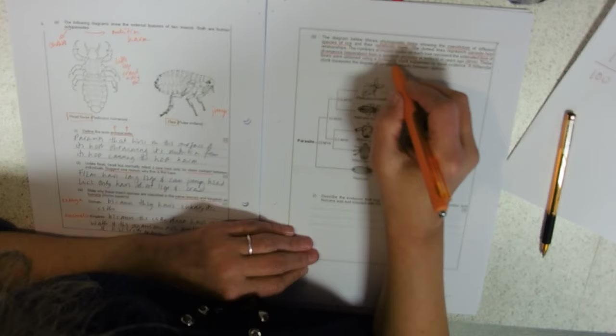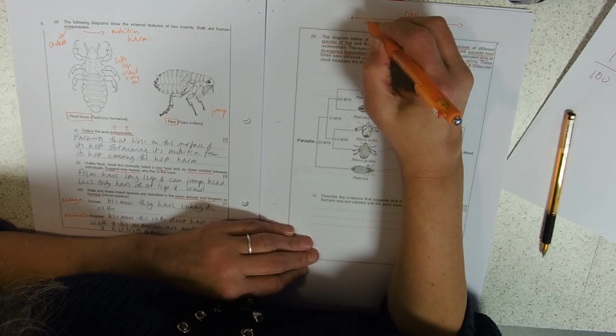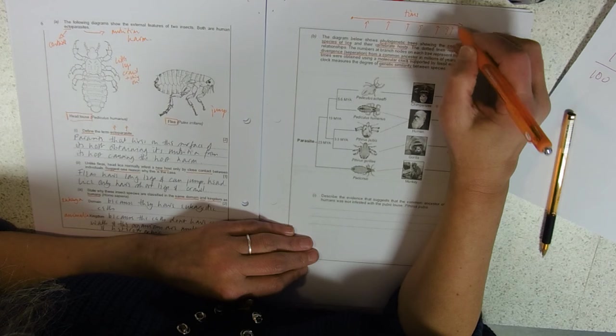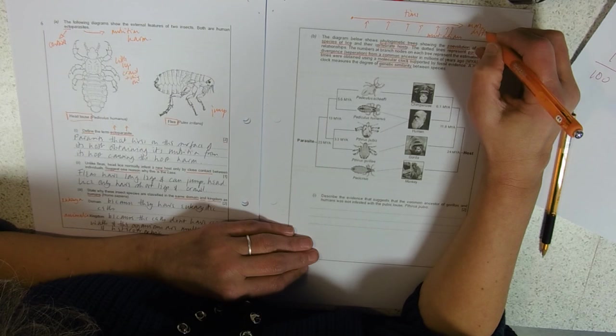That measures the degree of similarity. Remember that idea that as you go forwards in time, the longer you've got, more mutations build up, and you get more differences in stuff like DNA and amino acid sequences.